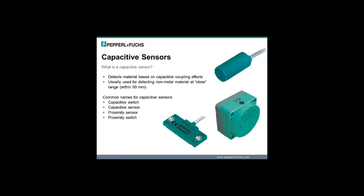A capacitive sensor is a sensing device based on capacitive coupling effects. This type of sensor detects material when the material comes within a defined distance of the sensing face. These sensors are commonly referred to as capacitive switches, capacitive sensors, or proximity sensors.